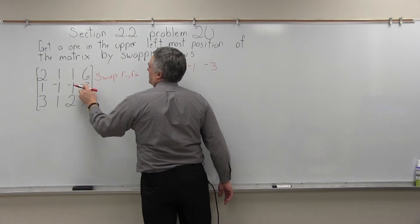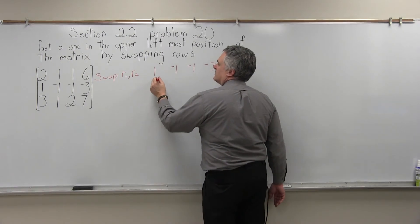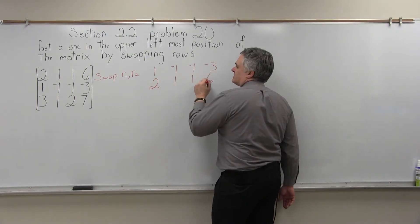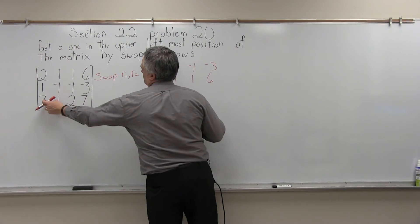What was in the row 1 position will go down to row 2: 2, 1, 1, 6. And row 3 will stay row 3 the way it is.